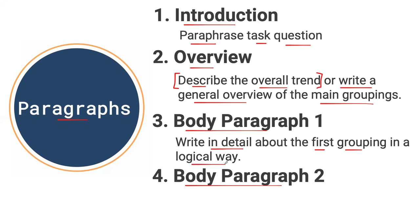Now let's go to our overview section. We want to talk about the overall general trend. I'm going to say: 'Overall, the general trend of Jamestown's social media users in 2018 showed that the older people were, the less likely they would be to use digital networking.' This is the overall trend. I want to point out this helpful grammar — 'the older people were, the less likely they would be to use digital networking' — this is a type of conditional phrase.